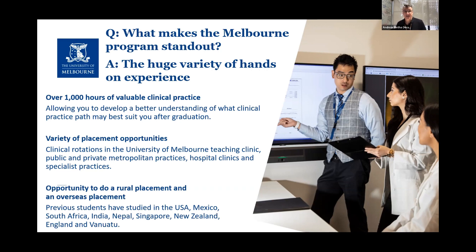We also have an opportunity to send students out to different countries. In our final year, which is spent purely doing clinical placements, we like to send our students out for maybe a six-week placement to all sorts of parts of the world, including the United States, Mexico, South Africa, India, Nepal, Singapore, New Zealand, England, and Vanuatu — and that list is expanding. Sadly we had to contract that during COVID, but we're now re-expanding it. That's a really key feature of the program at Melbourne that no other optometry school in Australia provides, and it sets us apart in preparing you for the wide scope of optometry post-graduation.